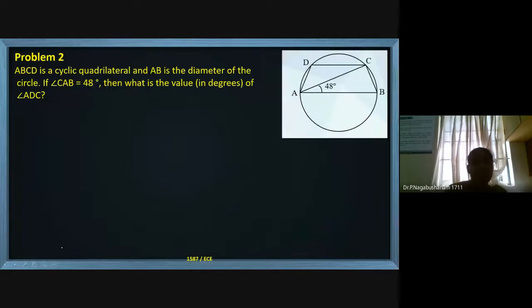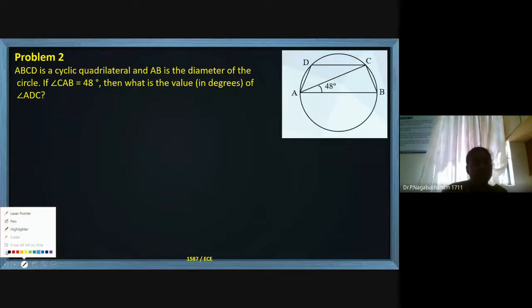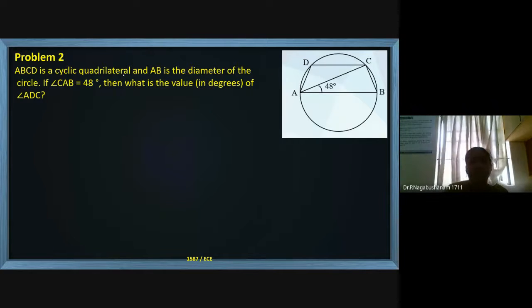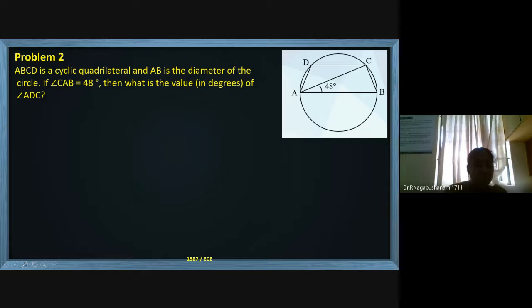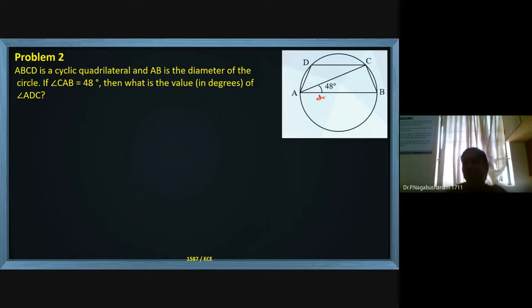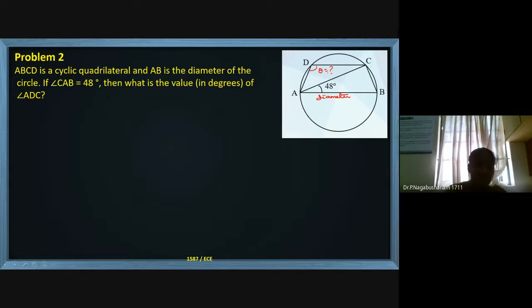Moving to the next problem. ABCD is a cyclic quadrilateral and AB is the diameter of the circle. We need to find the value of angle ADC.